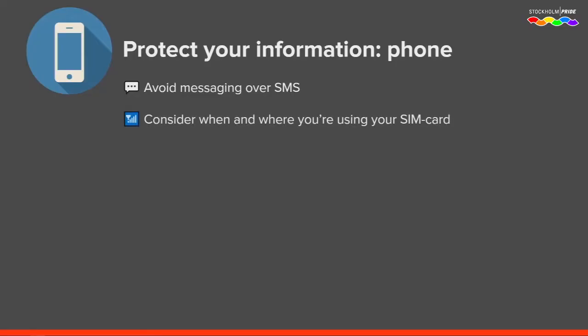Another thing with the phone is to consider when and where you're using your SIM card. As soon as you put the SIM card in, the phone connects to the cellular tower, and this is logged by the telecom company. If you want to keep your movements confidential, you should not use your phone's SIM card, or use a prepaid SIM card and a different phone — because your phone also has a unique fingerprint that is communicated to the cellular tower. Or you can simply use airplane mode so it doesn't connect at all.